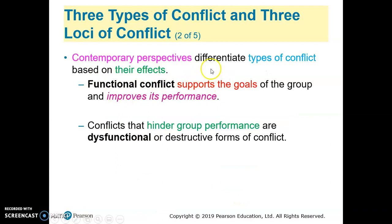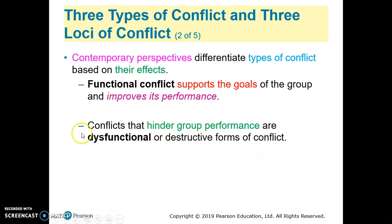From the contemporary perspective, there are two types of conflicts based on their effects. The first is functional conflict, which is the good side of conflict because it can actually improve performance in work settings or organizations. The other type is dysfunctional conflict, which hinders group performance and is considered destructive because it contributes to negative outcomes.